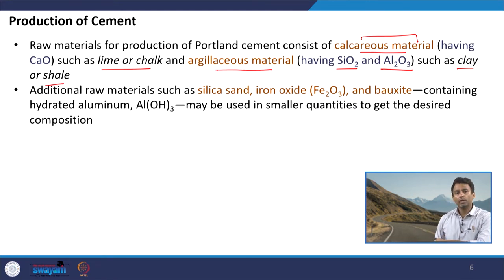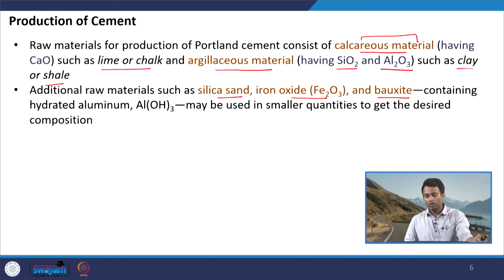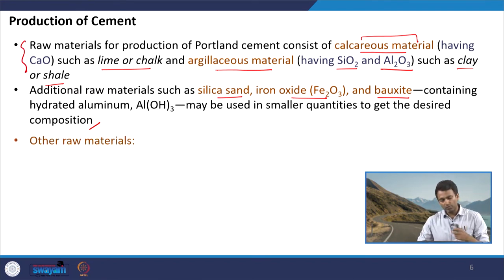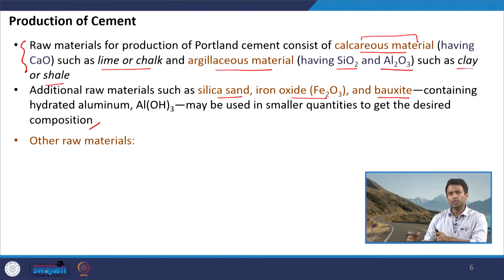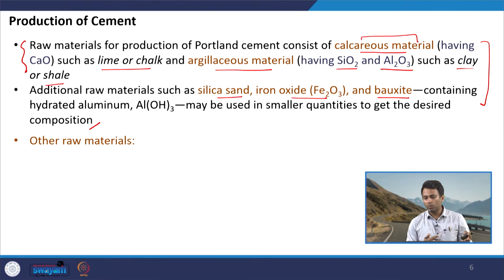Additional raw materials can be used as replacements when they provide the same basic ingredients — calcium oxide and silica-alumina. For example, blast furnace slag, a byproduct from industry, consists mainly of lime, silica, and alumina. However, because its lime content is not high enough to initiate the reactions, it must be mixed with additional calcareous material of high lime content.